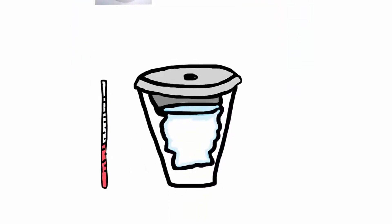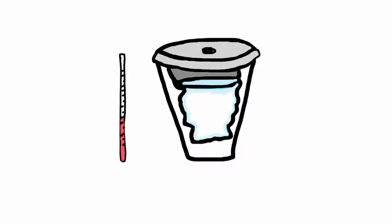Constant pressure calorimeters are called that because reactions are carried out at normal atmospheric pressure — 101 kilopascals. Most chemical reactions are performed in laboratories open to the atmosphere, so pressure doesn't change during the reaction. These reactions take place in water; the reactants are dissolved in water and then added into the coffee cup. Here I have a cup cut open so you can see inside and see the water. The styrofoam insulation retains the heat so nothing escapes the container.